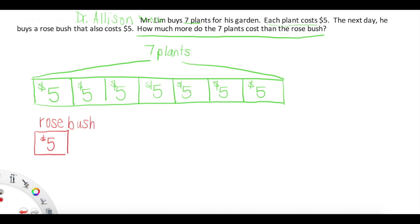Very different than our plants. You can see that we have a lot more plants than rosebushes. But something that I noticed across the rosebushes and the plants is that the plants and the rosebushes cost the same amount. Okay, now we have to think. How much more do the seven plants cost than the rosebush? So, in order to figure out how much money was spent on the plants, it looks like we need to consider seven copies of five dollars. Seven times five dollars.